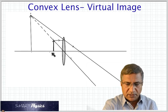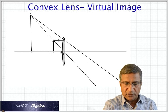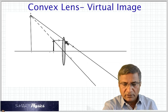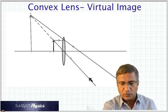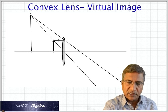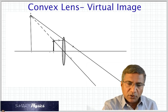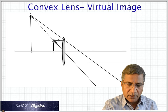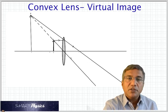Here is the virtual image produced by a convex lens. In this case, the object is inside the focal point, so the object distance is smaller than the focal length. We have the same two rays: the parallel ray after refraction will pass through the focal point, and the ray through the optic center will go through without refraction. But these two rays will not meet on this side because they are diverging, so we have to imagine that these two rays are coming from a point here — the refracted rays are extended backwards.